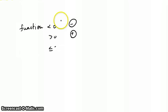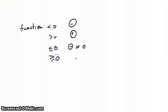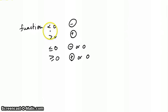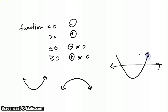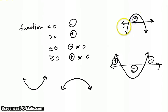Let's recap. If your function is less than 0, we want to look for all the negative values. If your quadratic function is greater than 0, we're looking for the positive values. If it's less than or equal to 0, we want negative or 0. If it's greater than or equal to 0, we want positive or 0. Your direction — if a is positive, the function goes up like a cup; if a is negative, it goes down like a frown. Anything above the x-axis line is positive; anything below is negative.